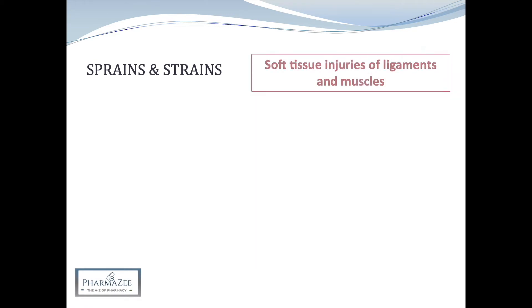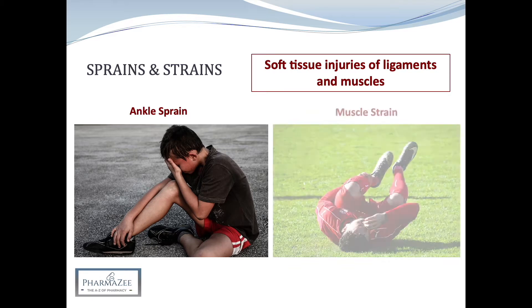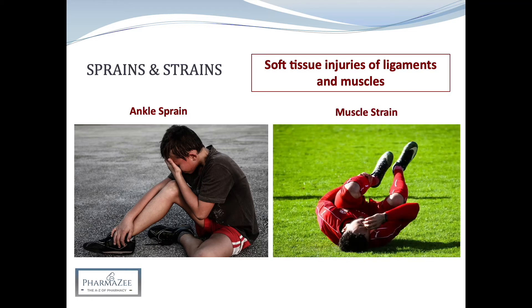Sprains and strains are musculoskeletal injuries; specifically they are soft tissue injuries of the ligaments and muscles. Ankle sprains are the most common form of soft tissue injury in primary care. Muscle strains or pulls commonly occur in sports which involve running or jumping, which can cause a muscle to over-stretch or contract too strongly.